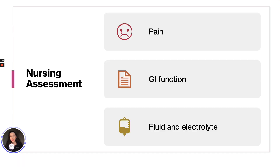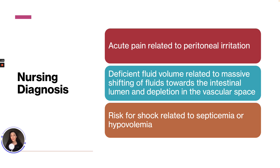For nursing assessment, we want to assess for pain continuously and ensure they receive pain management. We can look at GI function and should monitor fluid and electrolytes to make sure they are balanced. Nursing diagnoses include acute pain related to peritoneal irritation, deficient fluid volume related to massive shifting of fluid towards the intestinal lumen and depletion of vascular space, and risk for shock related to sepsis or hypovolemia.